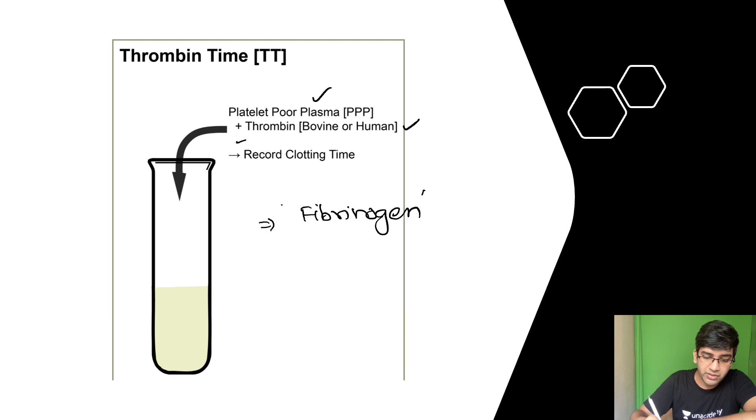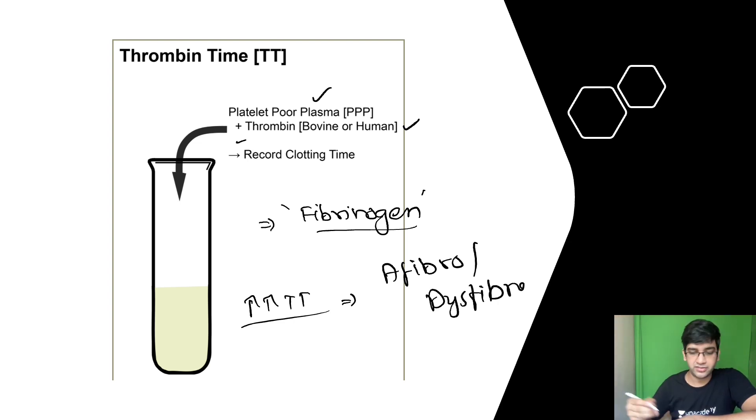So in other words, whenever my fibrinogen goes wrong, whether dysfibrinogenemia or congenital absence of fibrinogen, or can it be in DIC? Yes, the fibrinogen lowers. Because whenever fibrinogen is not produced or consumed, I'm going to have an altered APTT. Sorry, altered thrombin time. Thrombin time will be increased only in case of afibrinogenemia or dysfibrinogenemia. These are my inborn errors. Or it could be in a place where I have DIC or fibrinogen protection is less. On all those conditions, my thrombin time is going to be elevated.